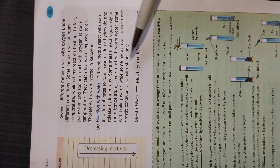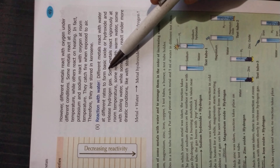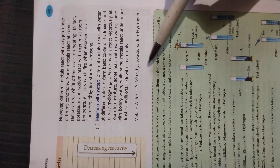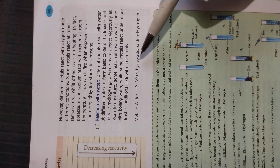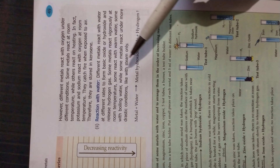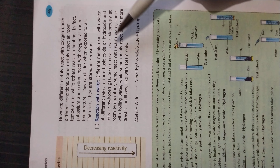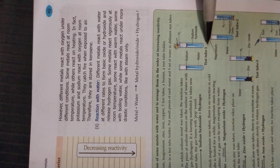Different metals react with water at different temperatures. Whenever a metal reacts with water, it forms basic oxides. Using a litmus paper: if the solution is acidic, blue litmus paper turns red; if the solution is basic, red litmus paper turns blue. So whenever a metal reacts with water, it forms a solution that is basic in nature.